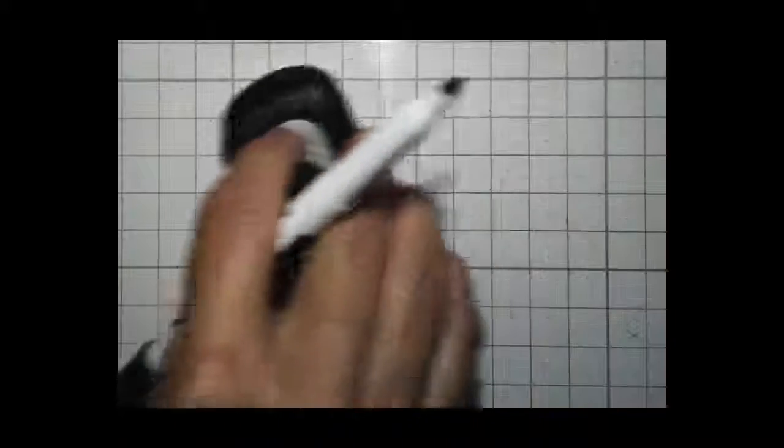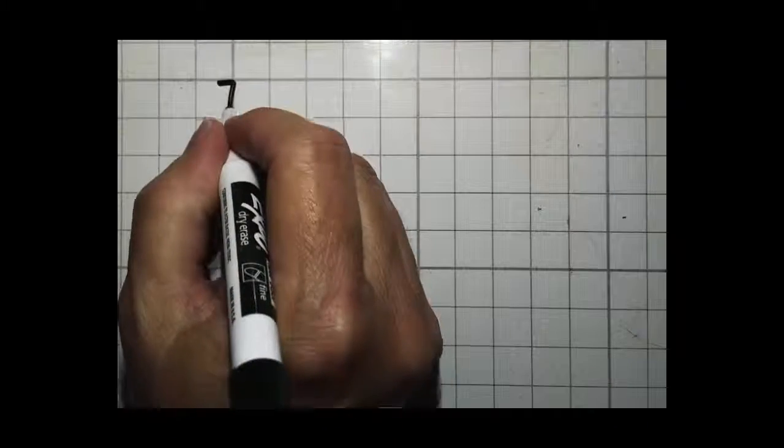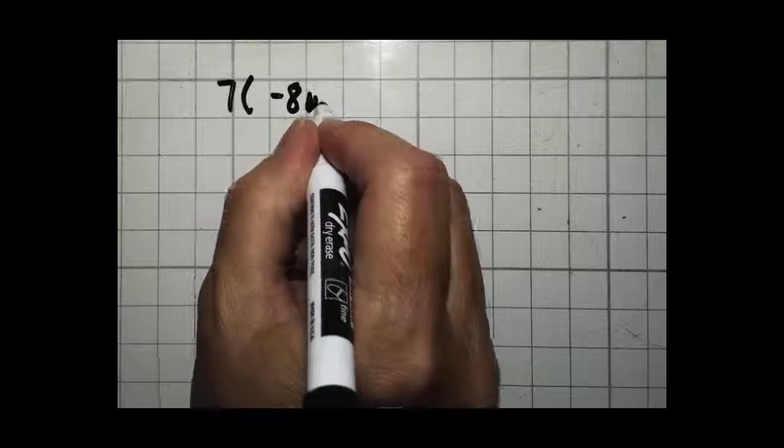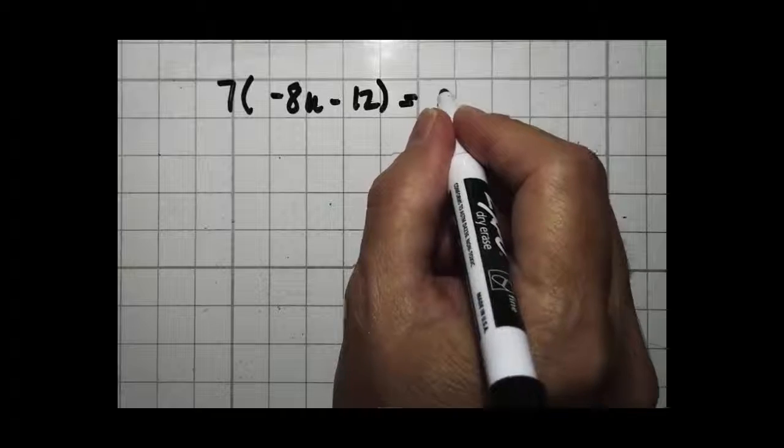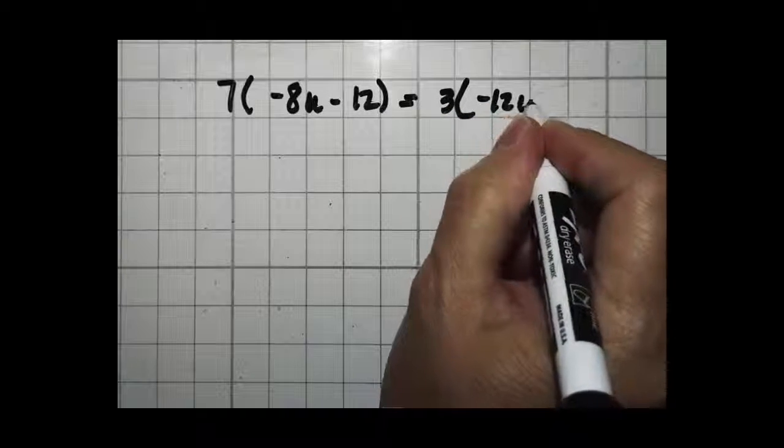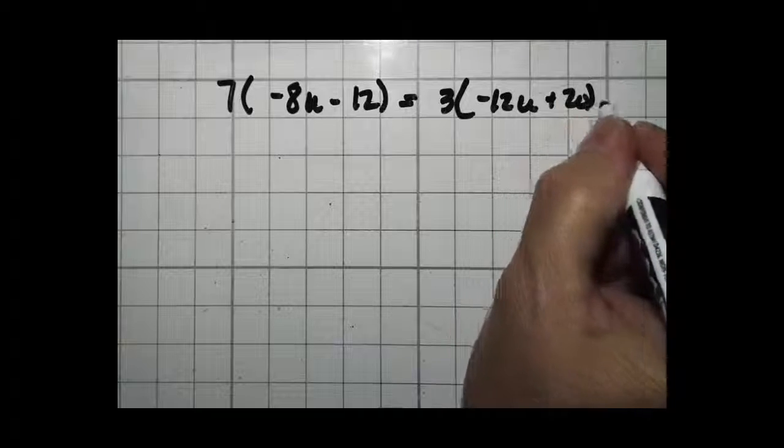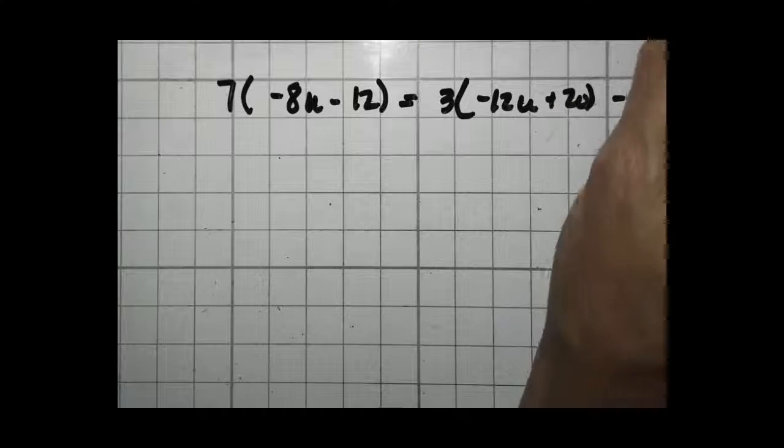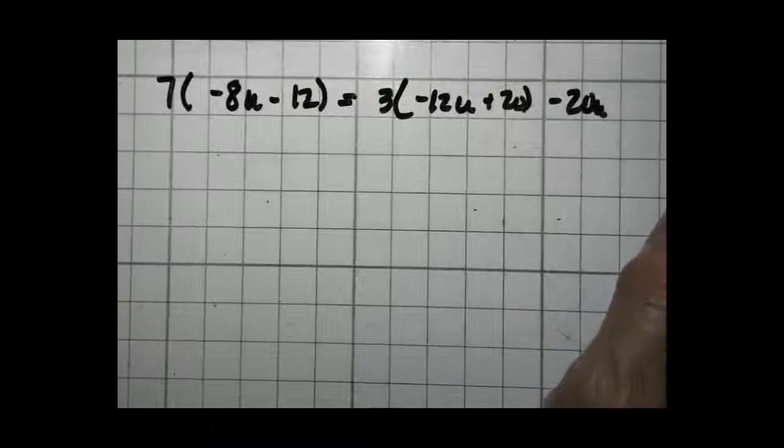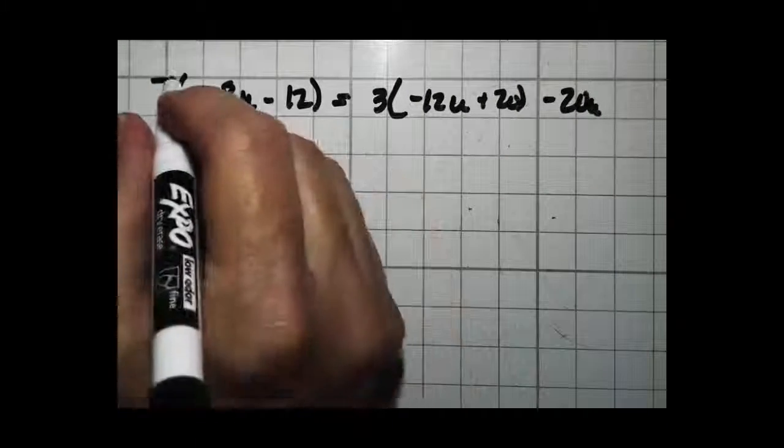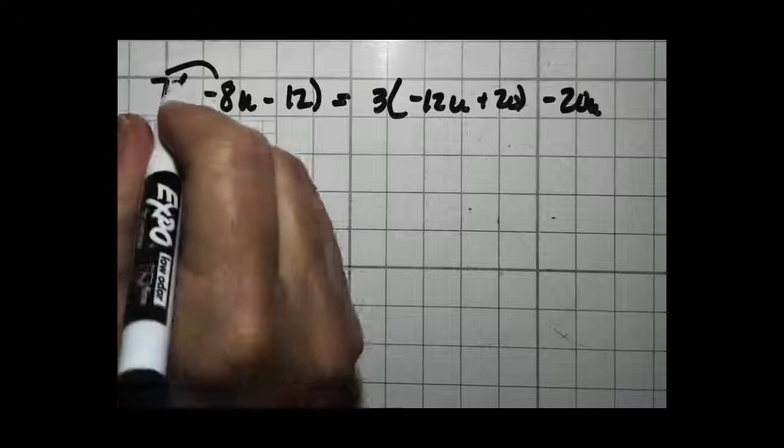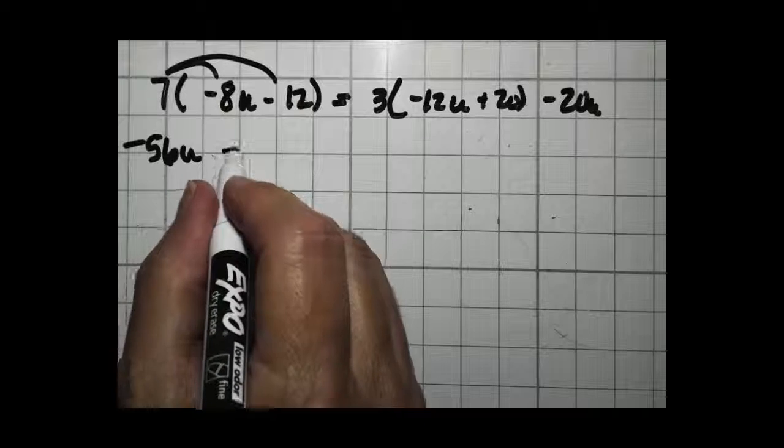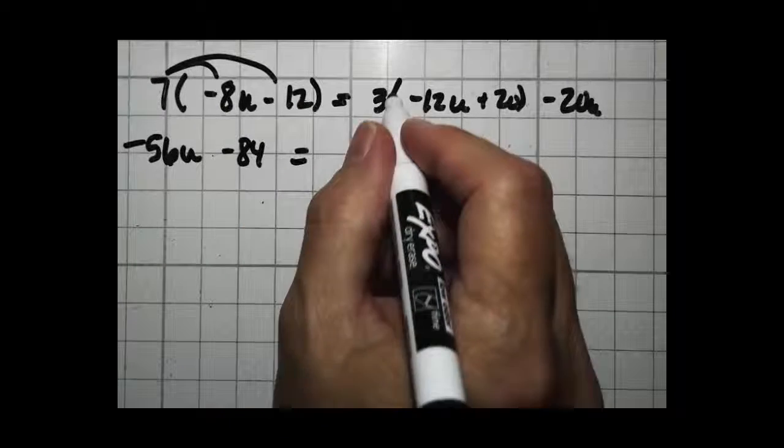Let's do our last problem of the day for identity and no solution problems. 7 times the quantity negative 8u minus 12 equals 3 times the quantity negative 12u plus 20 minus 20u. So again, the problem is not more difficult, there's just more steps to it. 7 times negative 8 is negative 56u. 7 times negative 12 is negative 84.